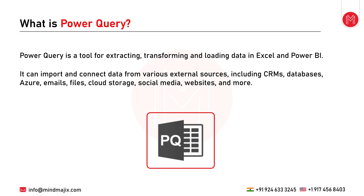Power Query uses a functional, case-sensitive language known as M — which stands for Mashup language — to carry out various tasks. Although the underlying code is hidden behind a graphical interface, advanced users can access and manually manipulate it via the formula bar or the advanced editor function. This can enhance the functionality and flexibility beyond what is possible in the graphical interface.